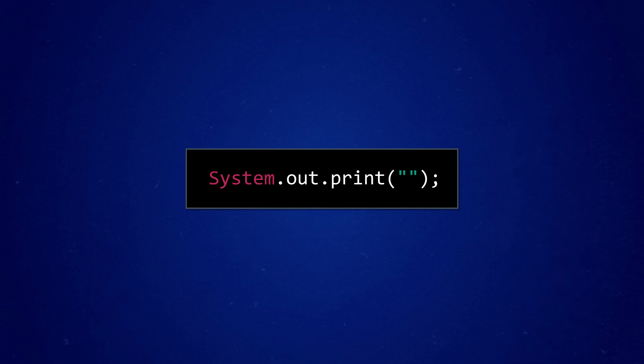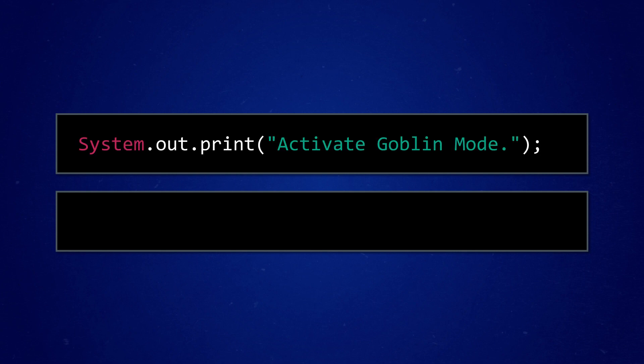So with just one line of code, I can make the computer say anything I want. For example, let's say we want to display the text 'activate goblin mode'. To do this, we set up our print statement, put that text in the parentheses, and the computer will print it out to the user. That's fairly simple — we give the computer the text, and it gives it back to us. The stuff we put in quotations is literal data, because it's going to be the same every time we run the print statement. Literally.